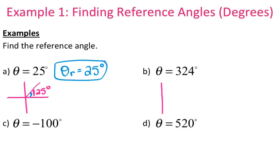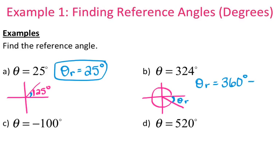For 324 degrees, I'm going to sketch out where my angle is. So 324 degrees is in the fourth quadrant. That angle measurement is 324 degrees, and this right here is your reference angle. Since a full rotation is 360 degrees, I need to figure out how big that wedge is. So I can take 360 degrees minus 324. The visual will help you figure out how to find the reference angle — I need to figure out how much extra I need to go from 324 to get to 360. So 360 minus 324 is 36 degrees — your reference angle is 36 degrees.